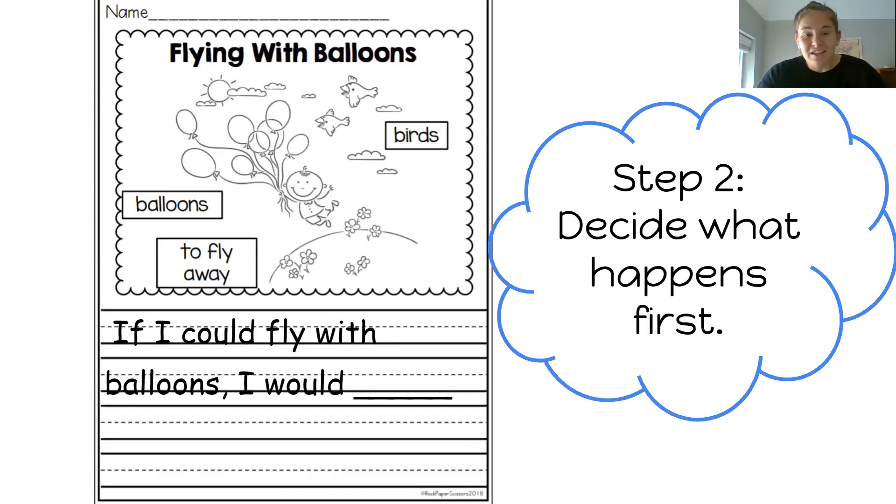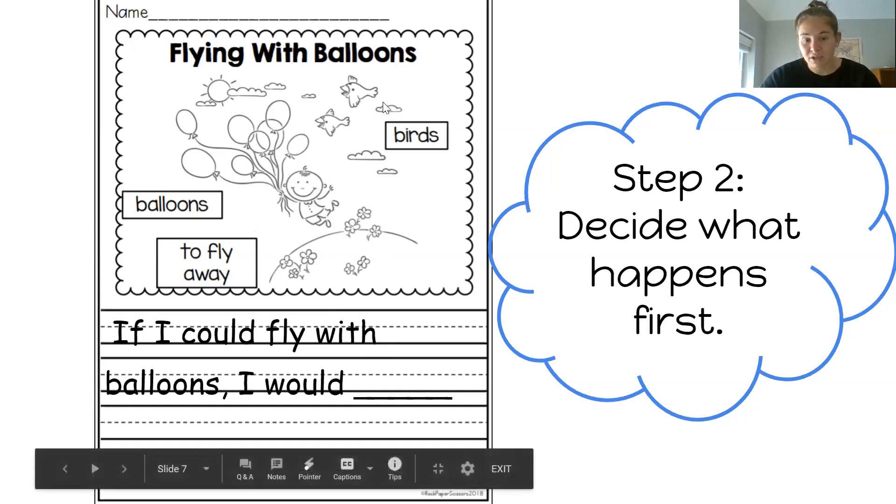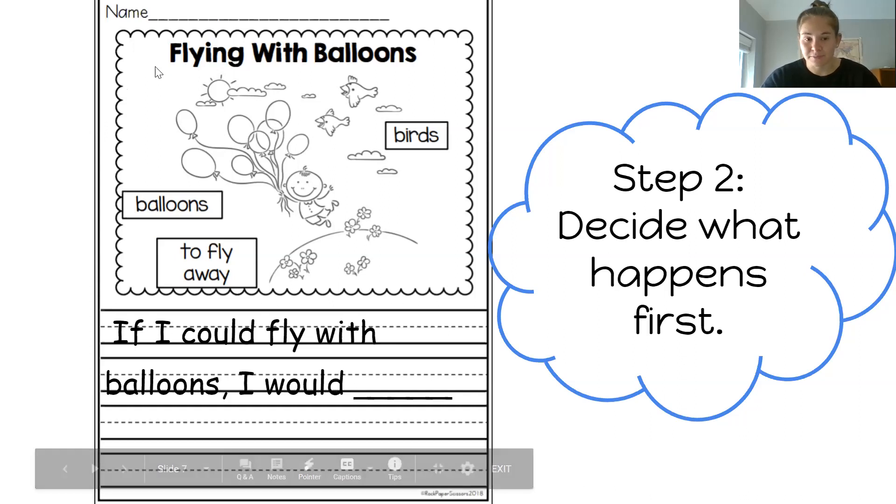Okay, so here's where you have to decide what you want to do first. So you've probably come up with a couple of ideas during brainstorming. During my brainstorming, I said that I would like to race a bird and I would like to wave at people who are flying in an airplane. I think I want to race the bird first, though. That's my first project. So choose what you want to happen first in your creative story.